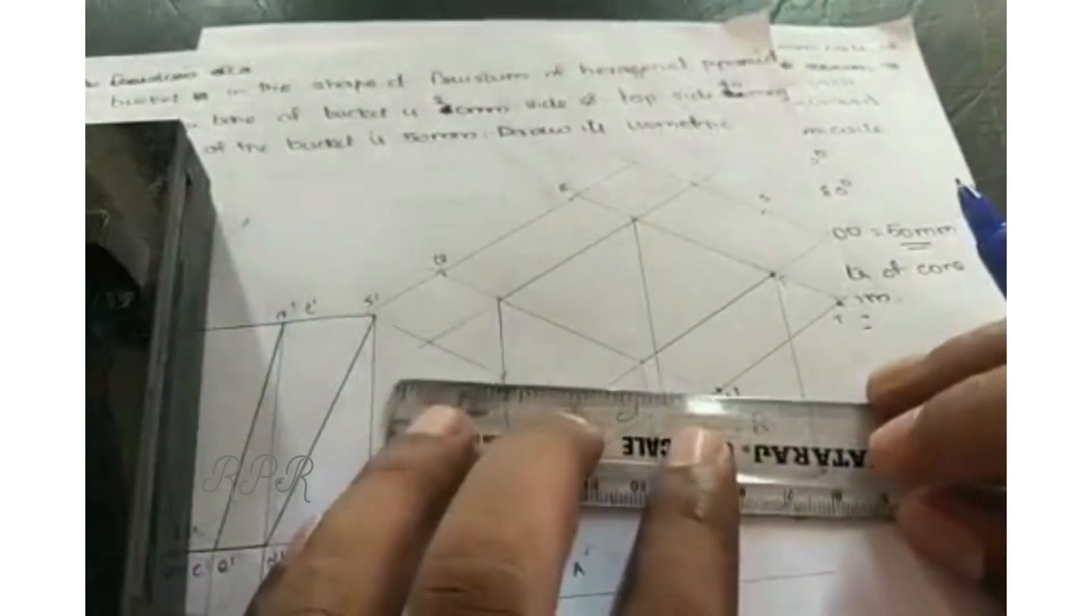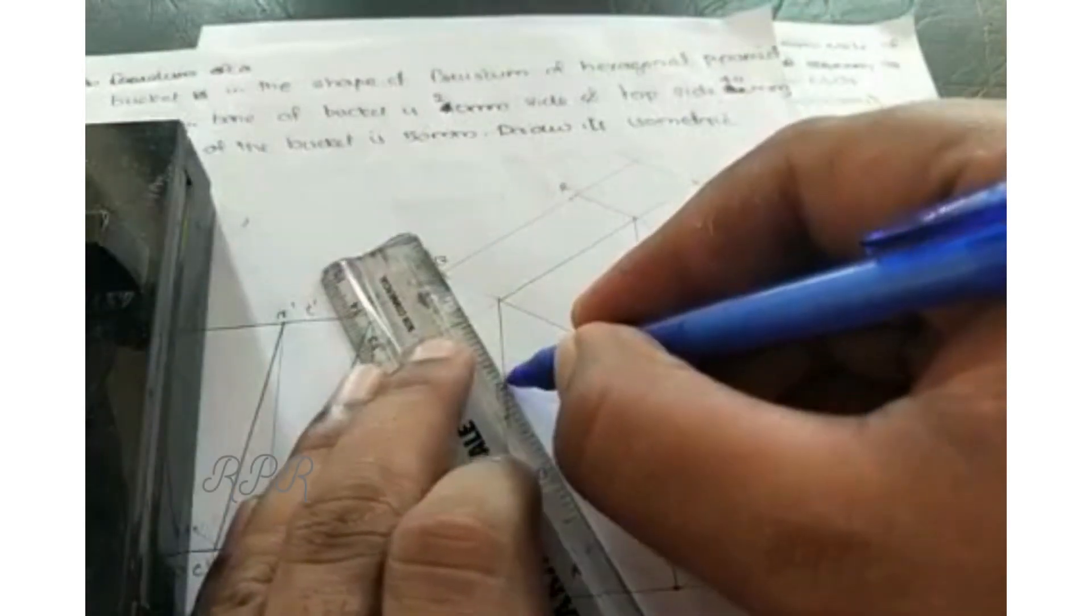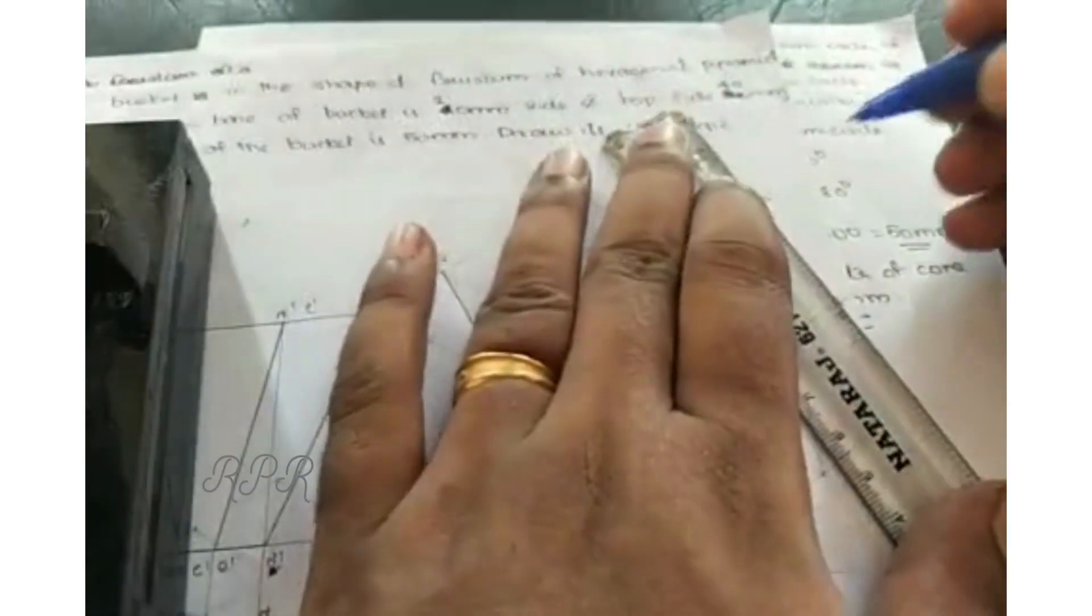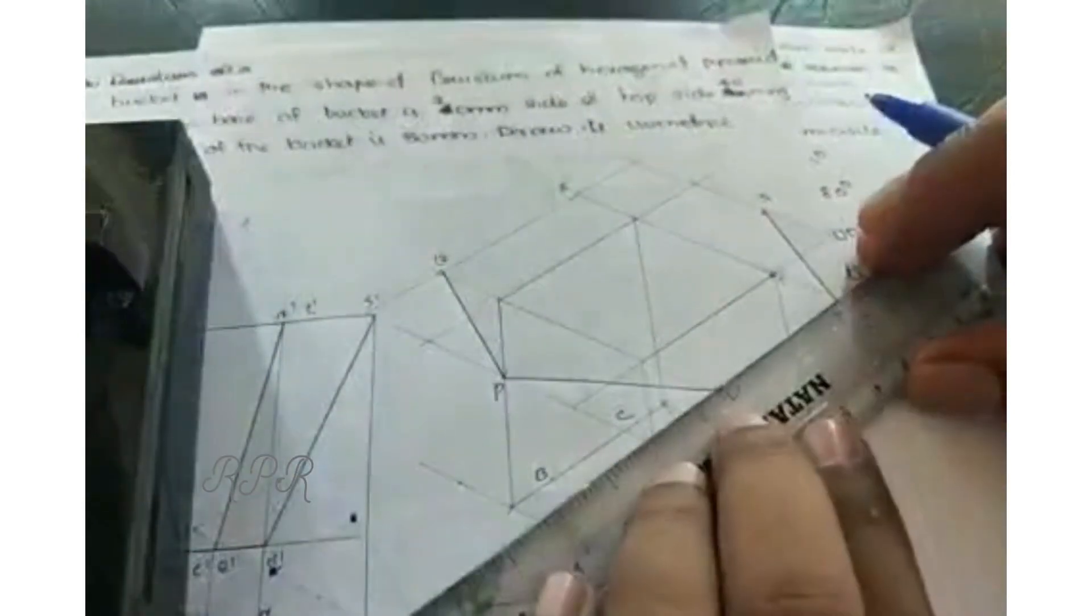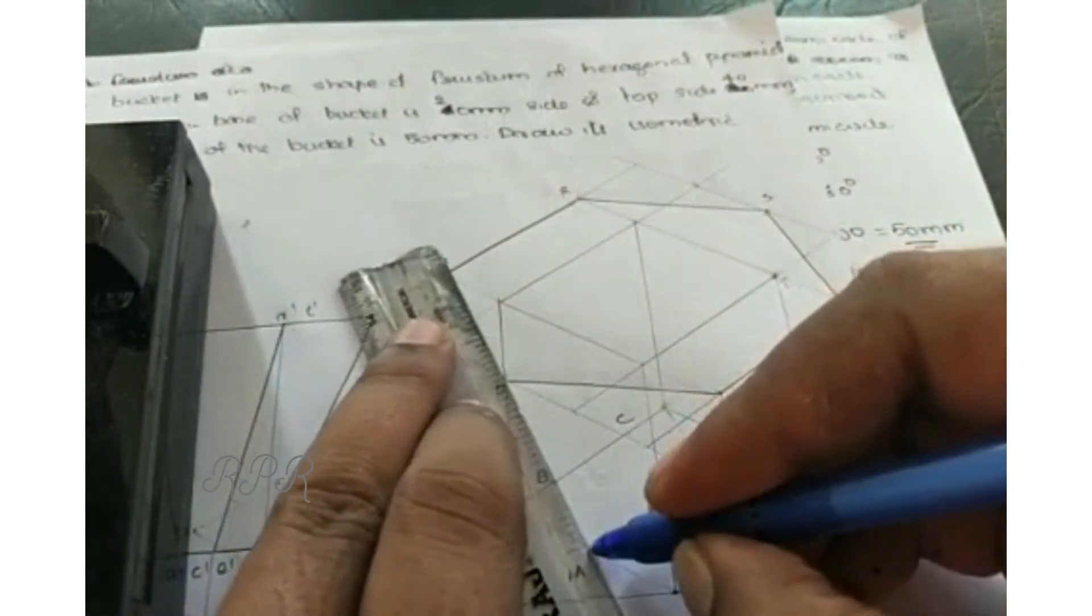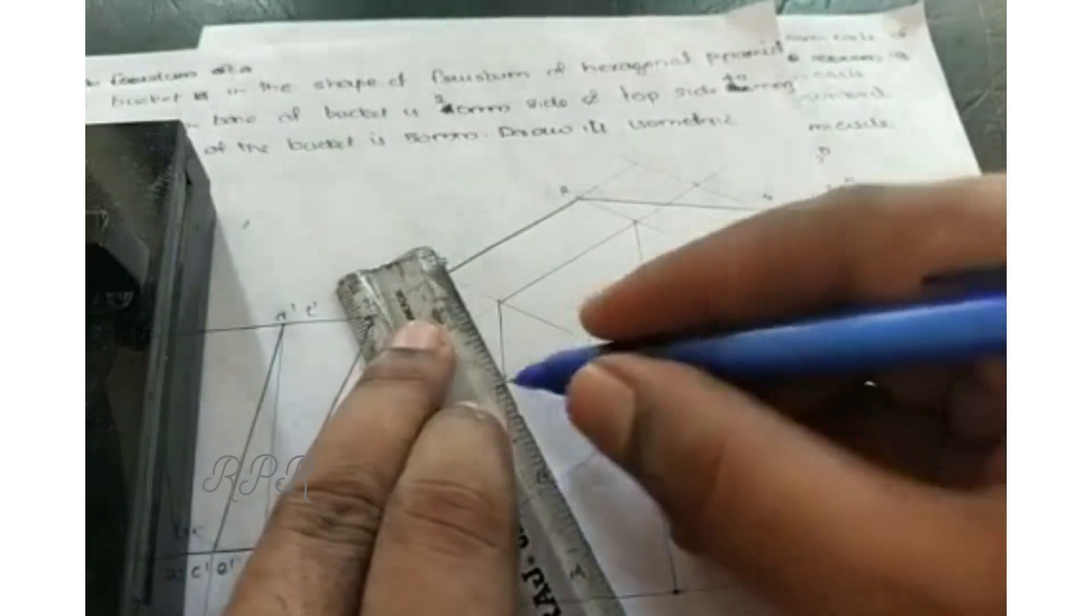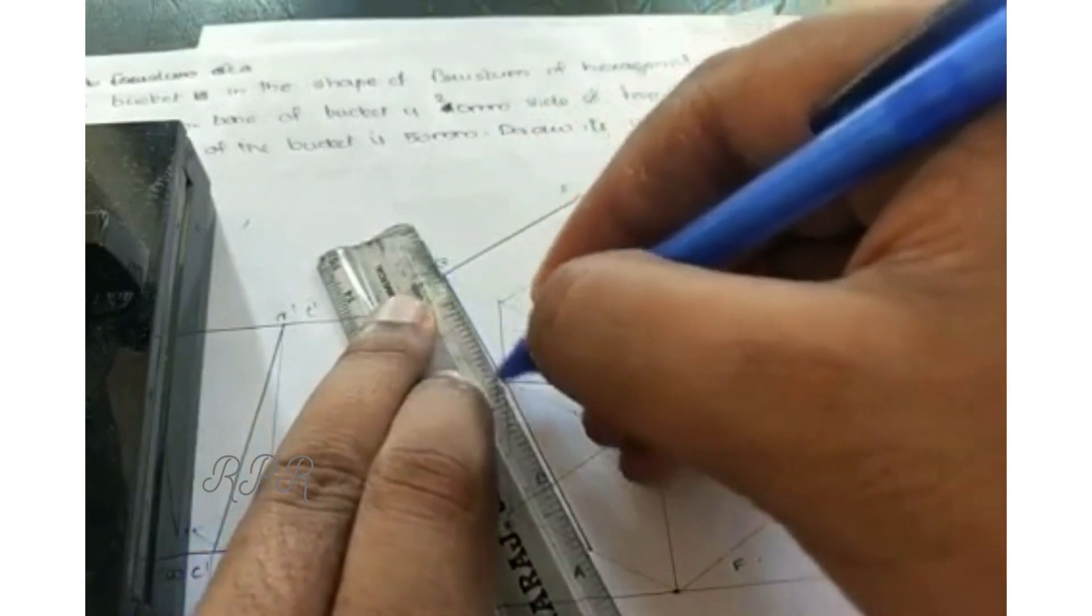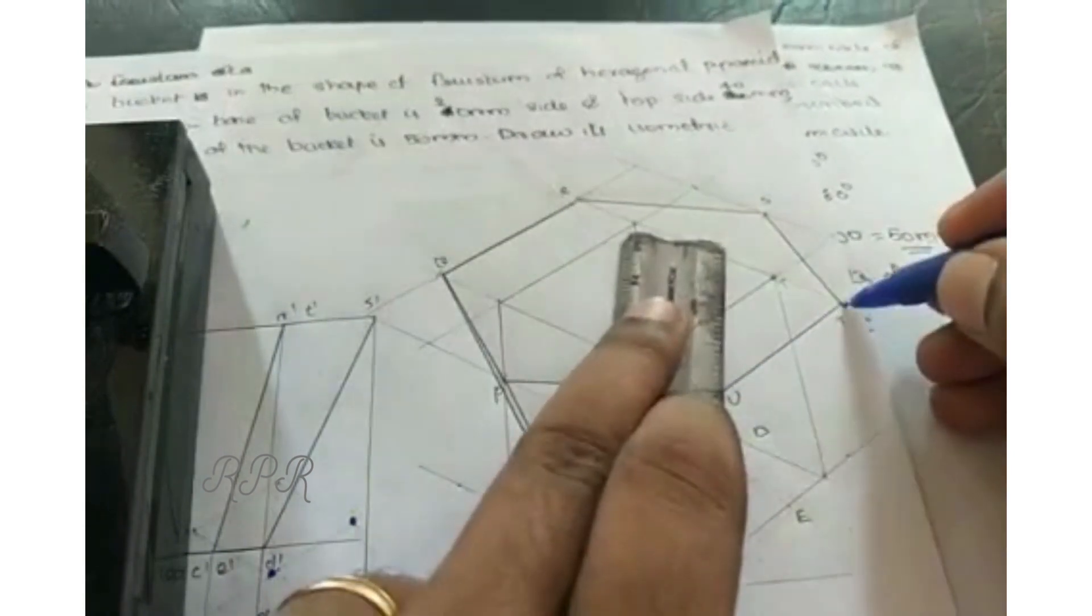First we will join PQRST to U. After joining PQRST to U, connect P-A, Q-B, U-F, T-E.